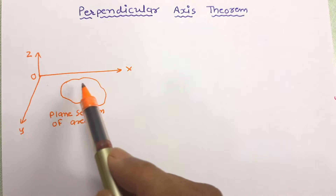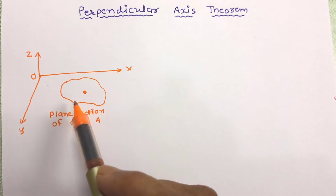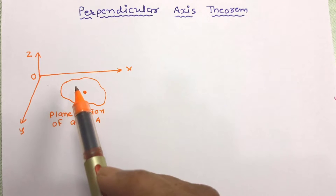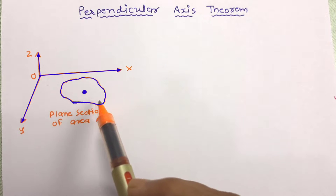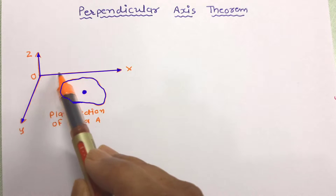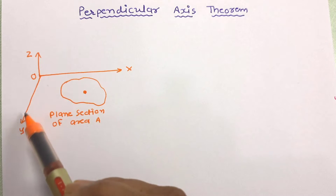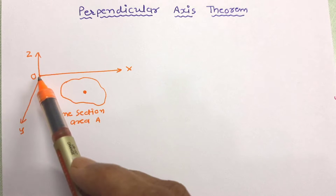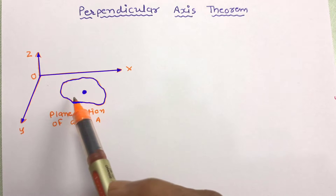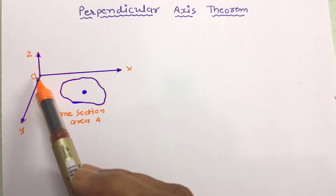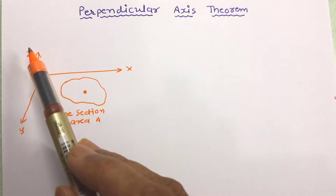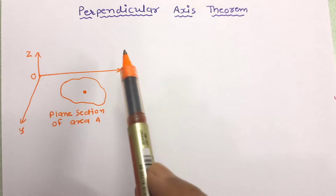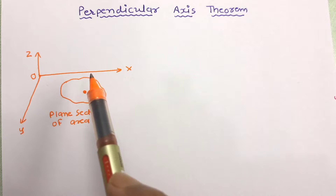The Perpendicular Axis Theorem is useful when the moment of inertia of any area about two mutually perpendicular axes is known and the moment of inertia of the same lamina about the third perpendicular axis is to be determined — then this theorem will be useful.